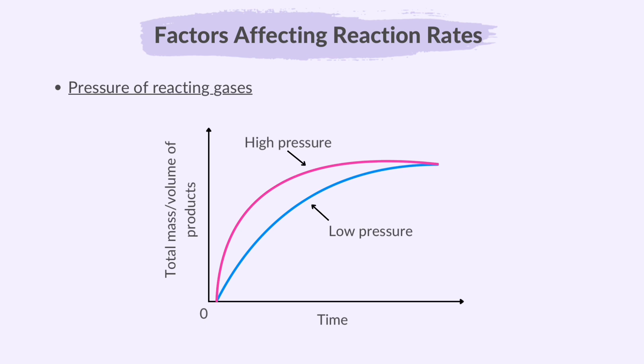If you observe the pink line on the graph, it has a steeper slope, indicating a higher rate of reaction.